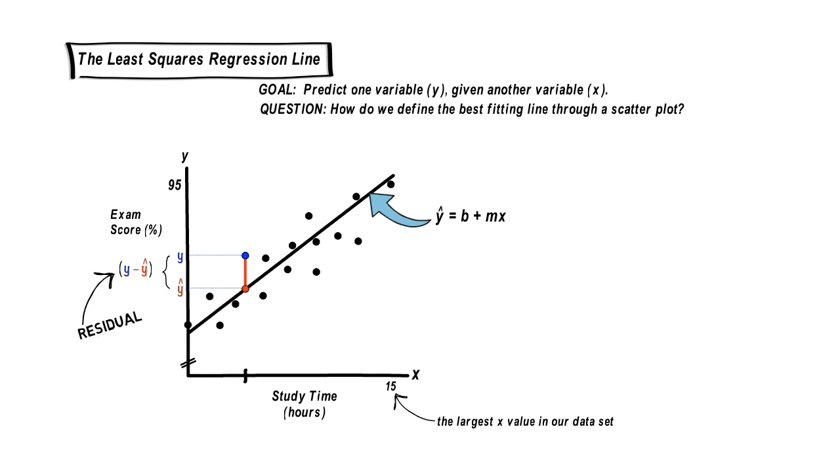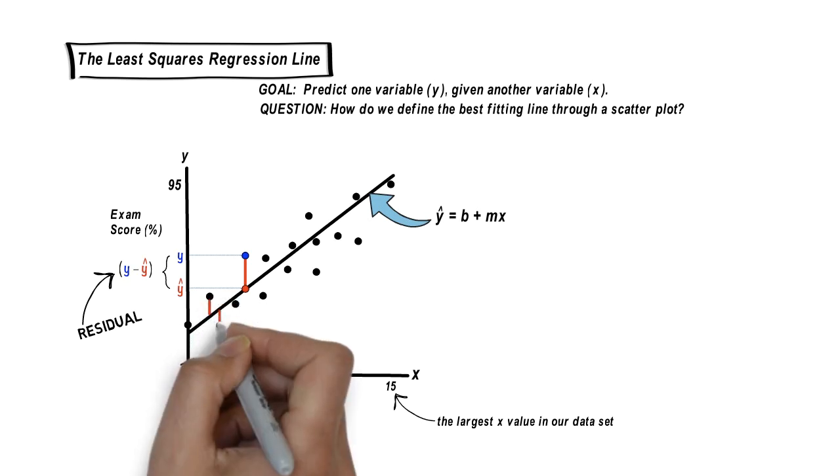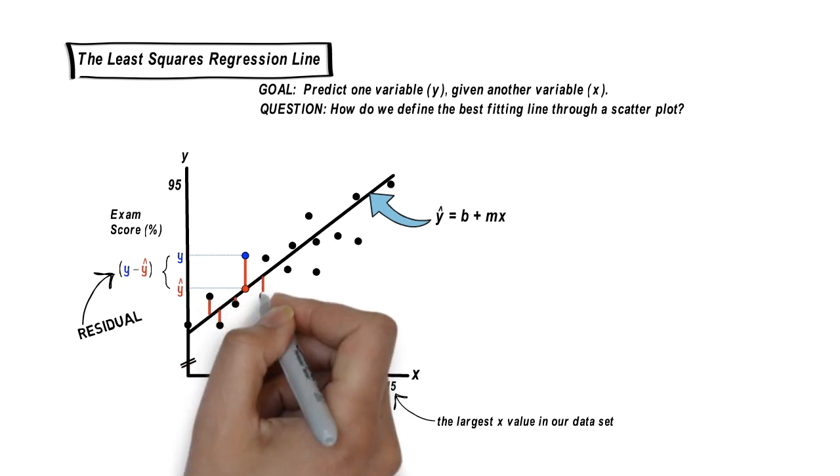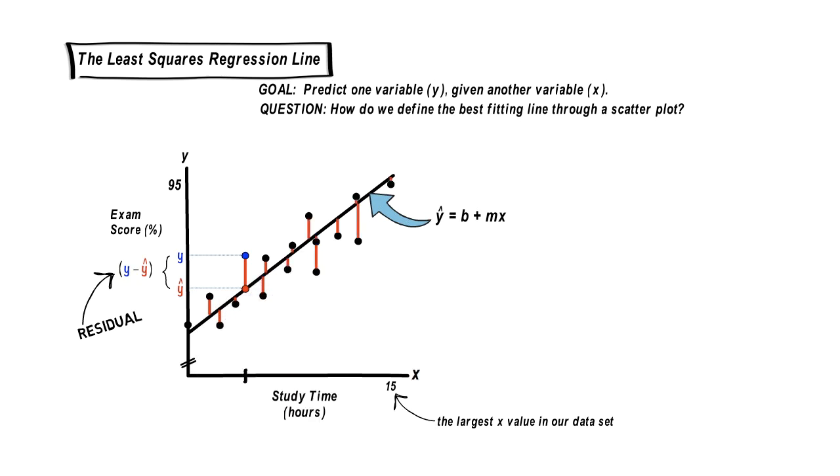OK, I need you to really focus now because things are going to get a bit complicated. I want you to think about calculating the residual for every data point we have. We have 16 dots here, which means we would have 16 residual values.